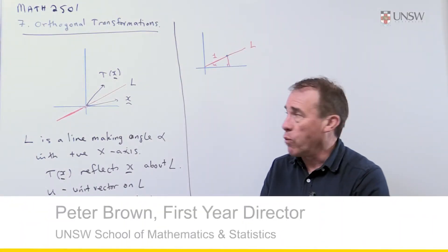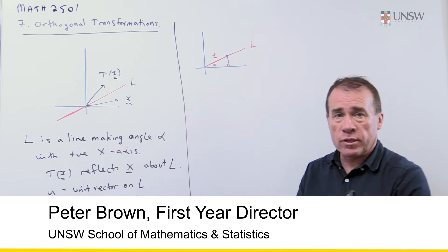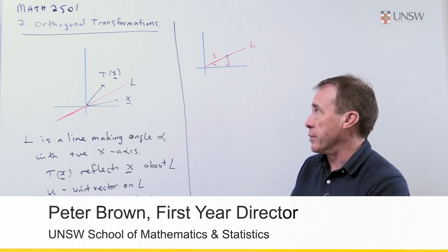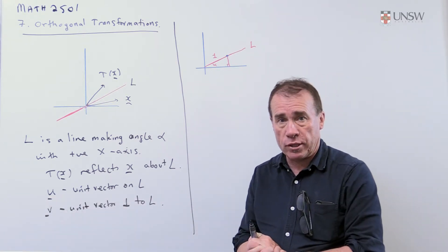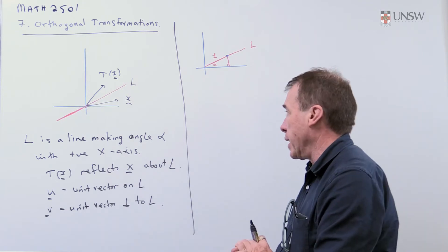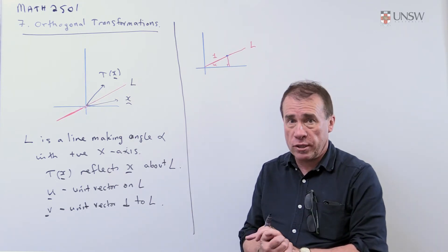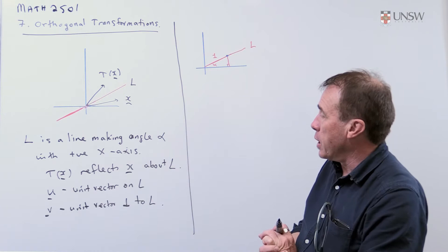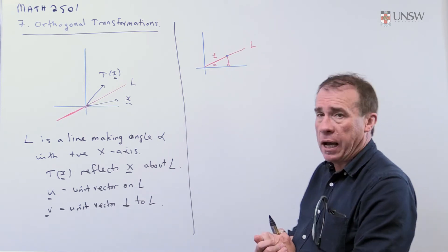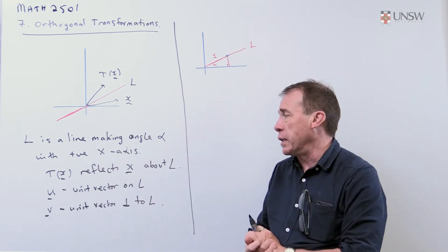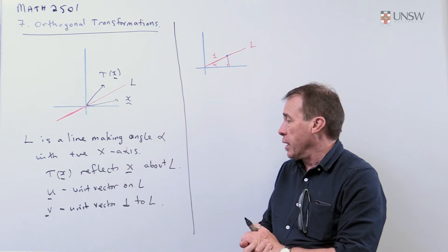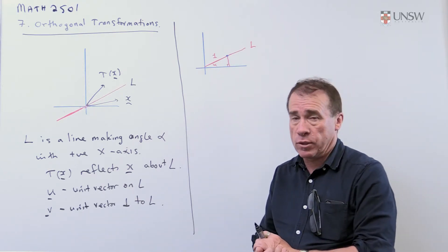So this is Math 2501. I'm going to do a couple of questions out of section 7. This is on orthogonal transformations, basically reflections and rotations. So this particular question is a slightly harder one, but quite an interesting one and it has lots of nice ideas in it which are quite useful.